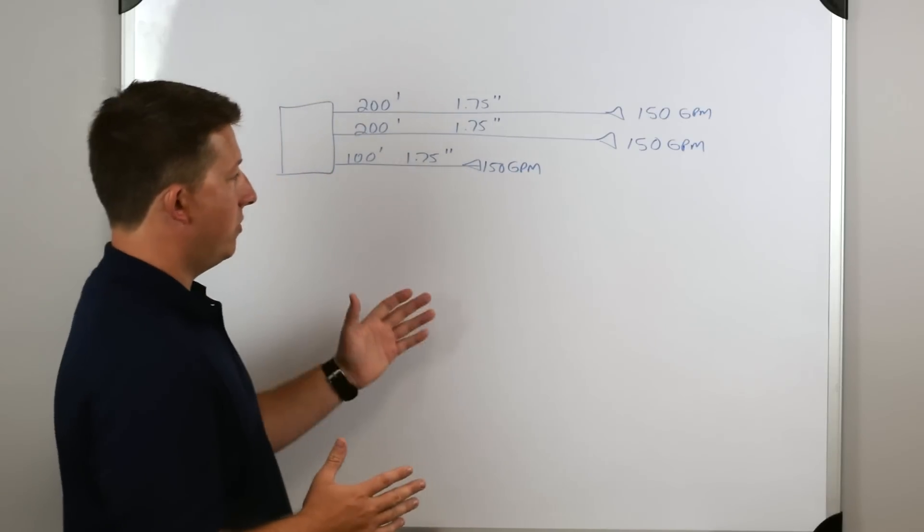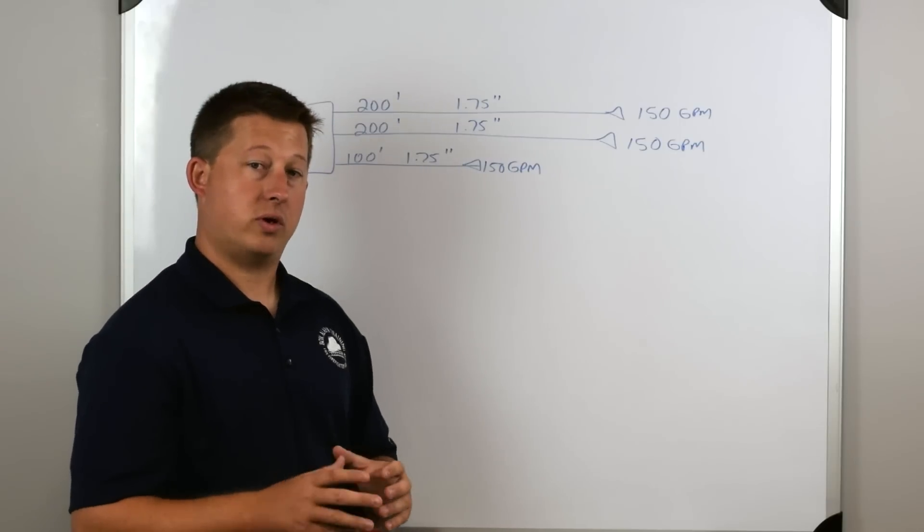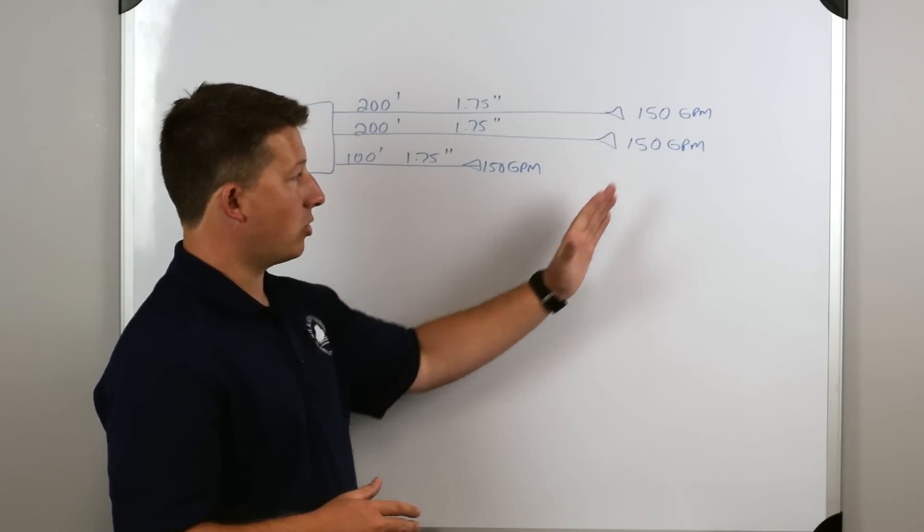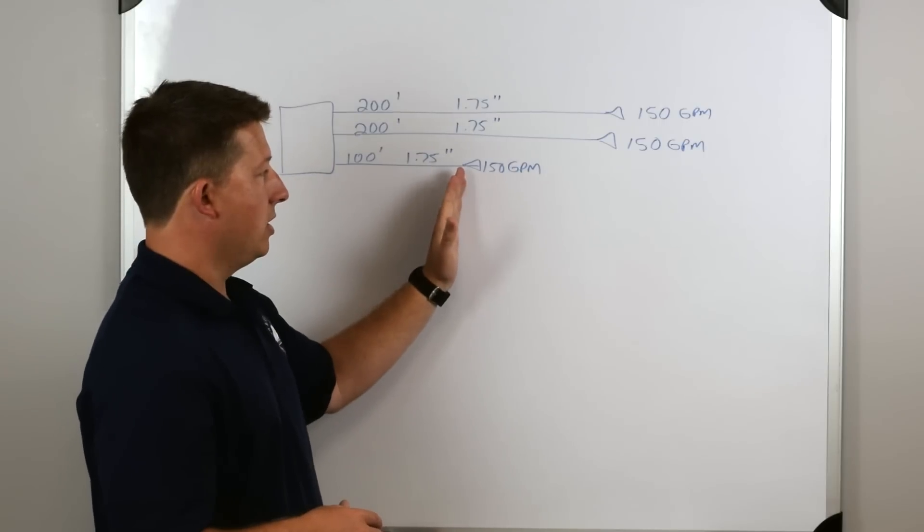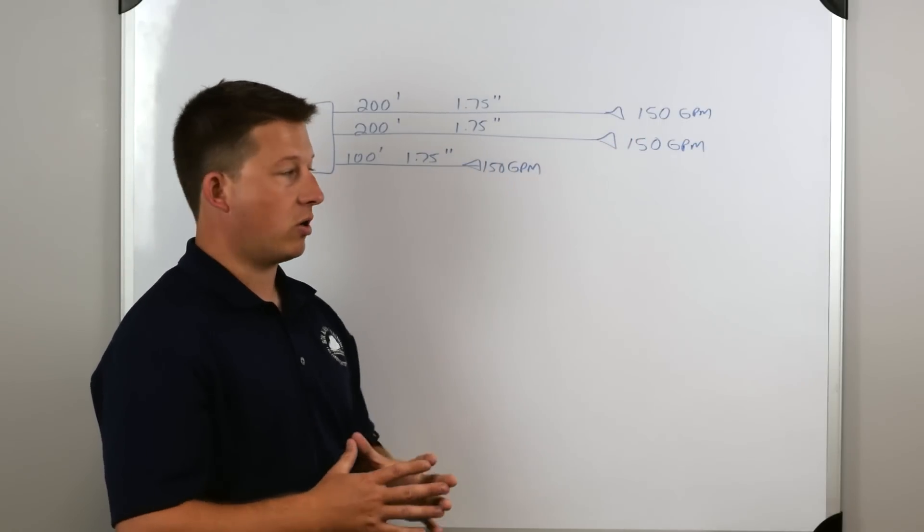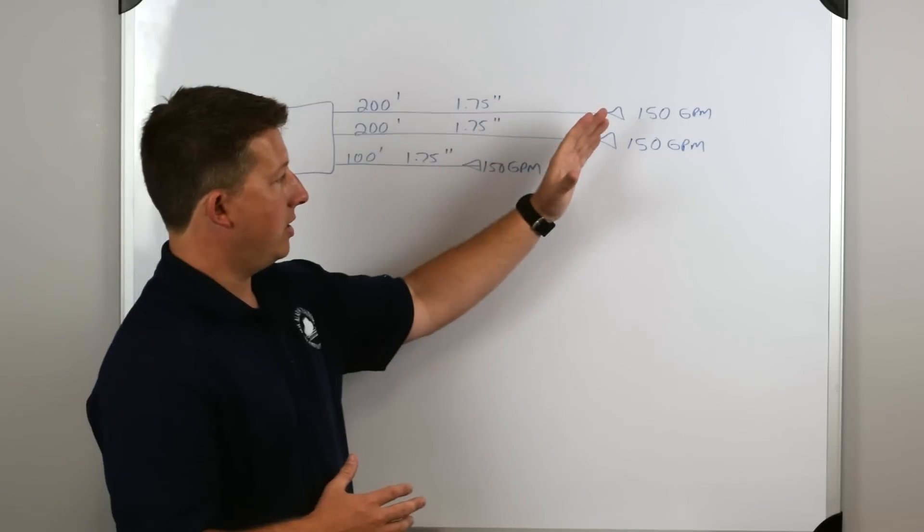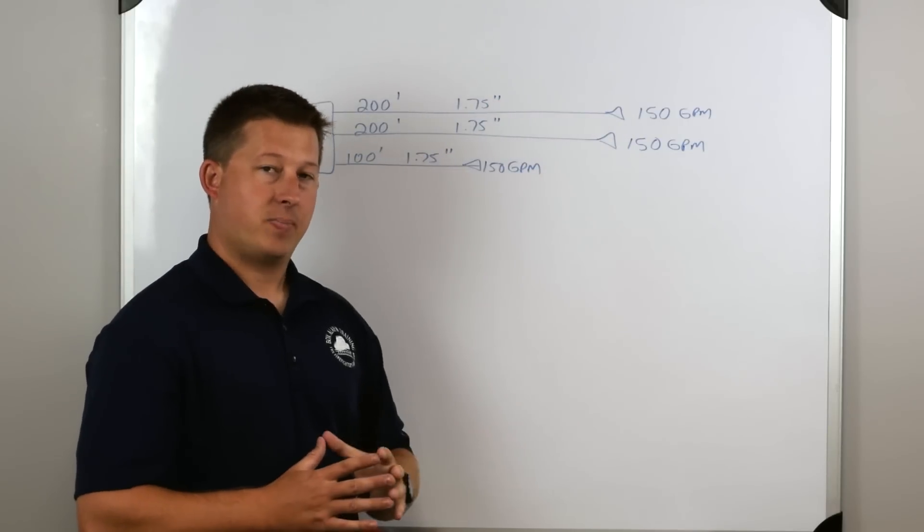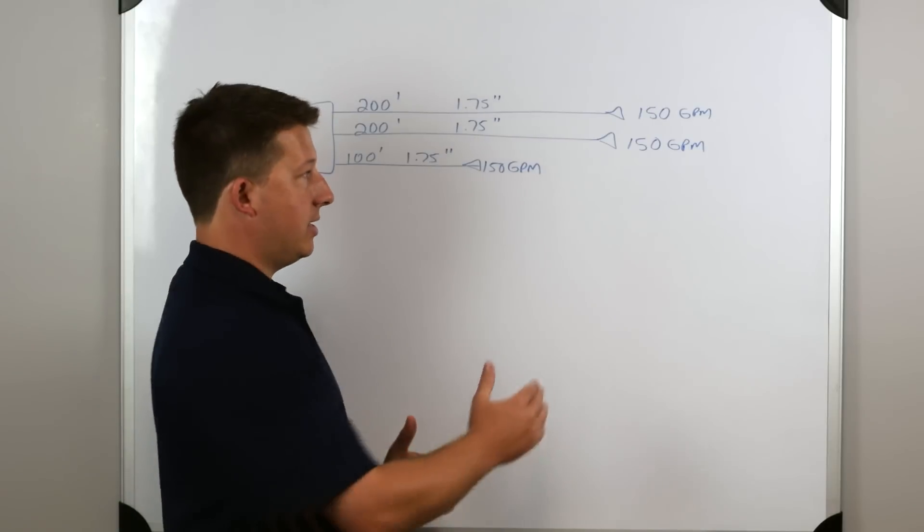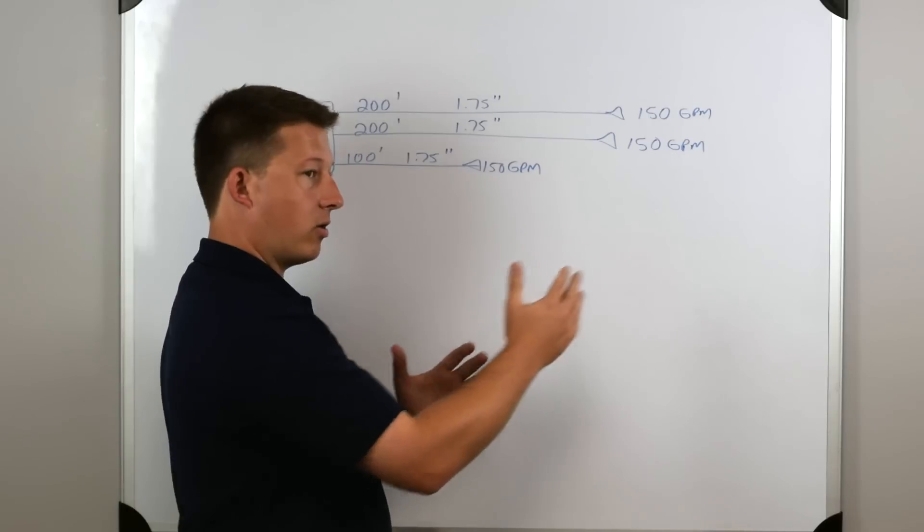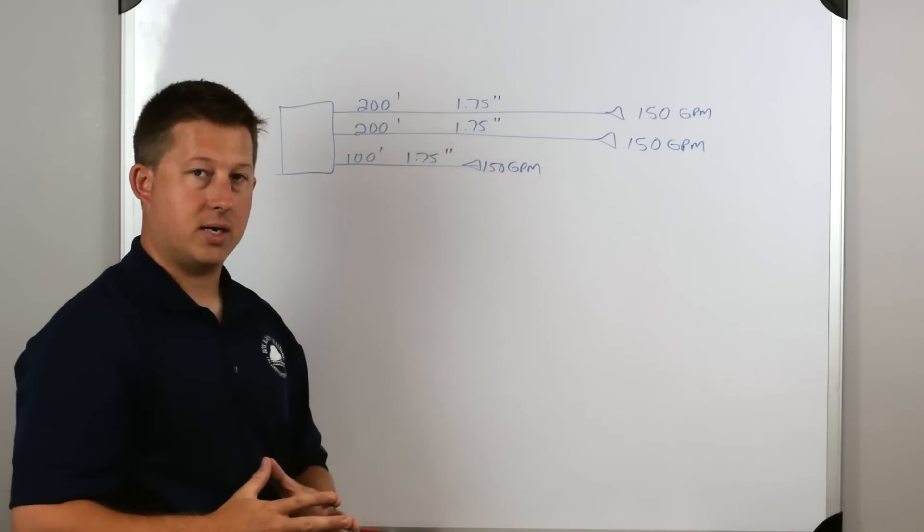So if you have a truck that operates with a relief valve, you would set your relief valve to your high settings, because if you set your relief valve to this low one, you would never be able to get your pressure up. It wouldn't work correctly. So this is how we look at flowing multiple lines. We don't double the pressure or anything like that. We're simply trying to get the correct pressure and gate back or throttle up depending on what we need.